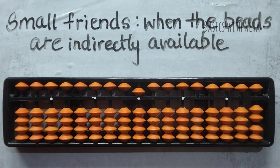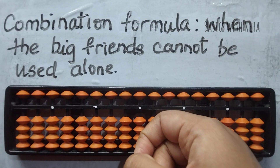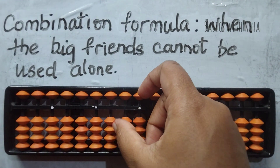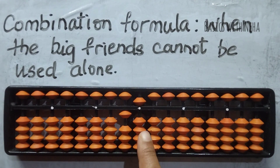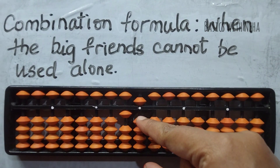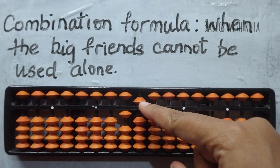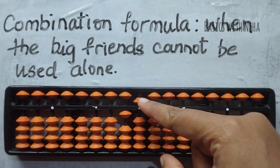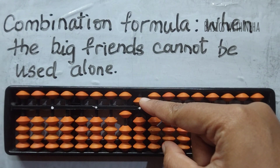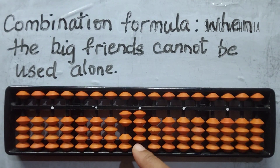Now let's see the combination formula. Combination formulas are those which are the combination of big friends and small friends together. They are used when the big friends formula cannot be used alone. For example, if I have 15 and I need to add nine — to add nine, I don't have enough beads; I have only four beads available. I would directly use the big friends formula, which is plus 10 minus 1, but minus 1 is not directly available — you have five beads but cannot directly pull one bead. So I use the combination formula for plus nine: plus 10 minus 5 plus 4. My answer will be 24.